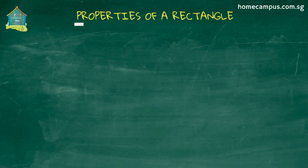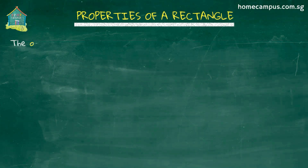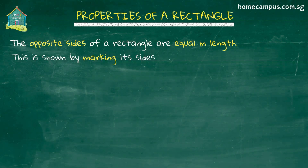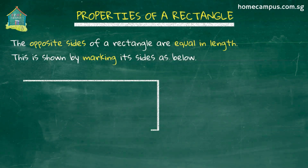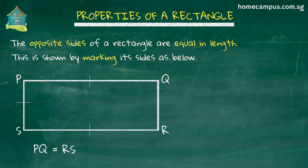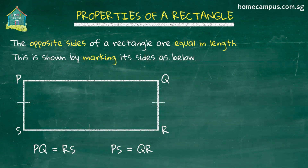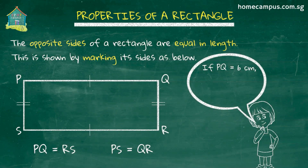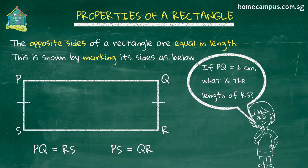Now let's look at the properties of a rectangle in detail. In a rectangle, the opposite sides are equal in length. This is shown by these little markings on its sides. So in this rectangle, PQ is equal to RS and PS is equal to QR. Here's a question for you: if PQ is equal to 6 cm, what is the length of RS? The answer is the length of RS is 6 cm, since the opposite sides are equal.